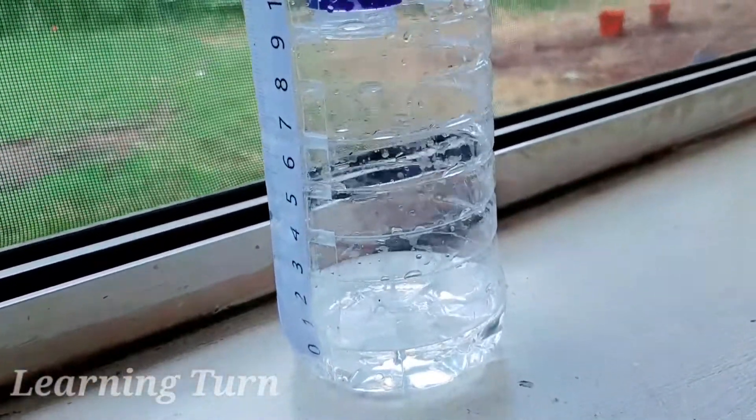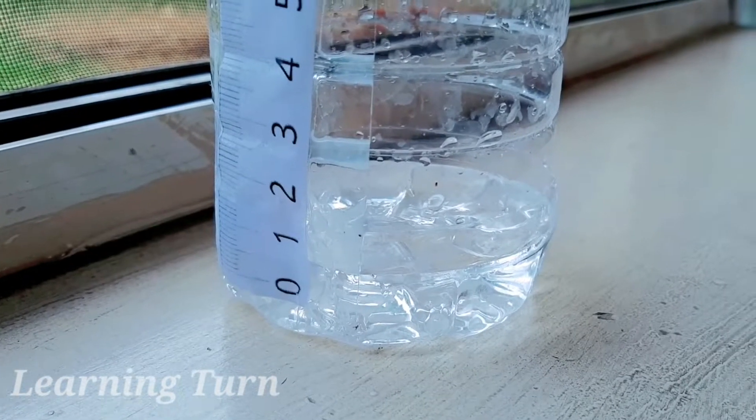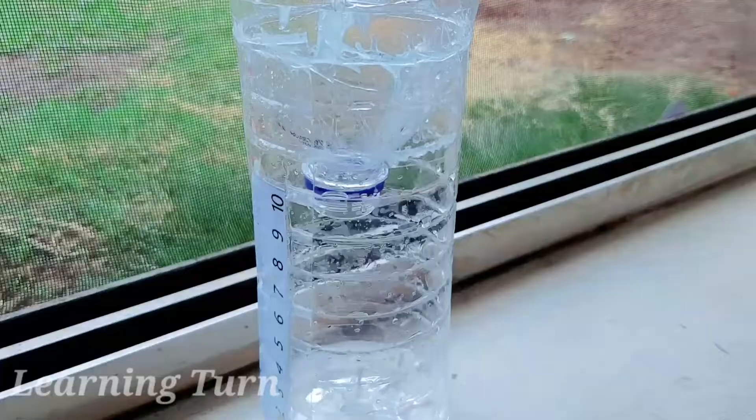The measurements you get from the rain gauge will tell you how much rainfall has occurred over a certain period of time. Here I have recorded 5 millimeters of rainfall.